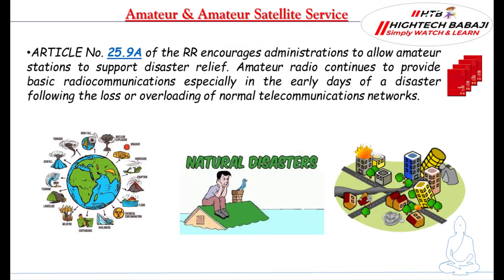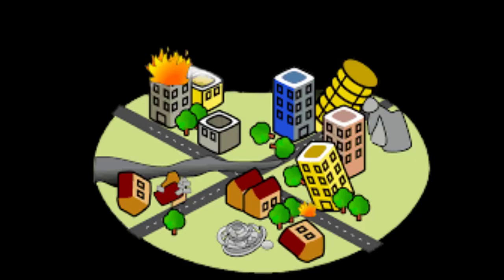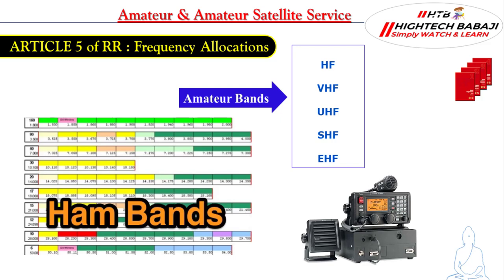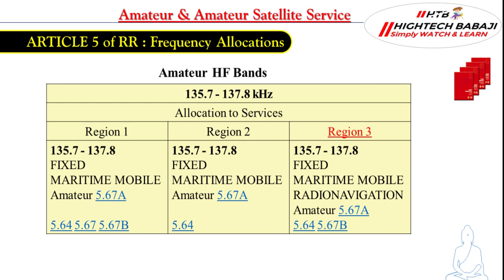Radio amateurs also support governments in disaster relief. Article 25.9 of the Radio Regulation encourages administrations to allow amateur stations to support disaster relief, as amateur radio continues to provide basic radio communication especially in the early days of a disaster. Regarding frequency allocation, Article 5 of the Radio Regulation gives the detailed description of frequency allocations to Amateur bands, covering the high frequency range, very high frequency range, ultra high frequency range, super high frequency range, and extremely high frequency range.